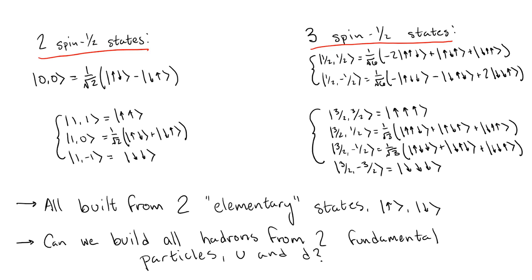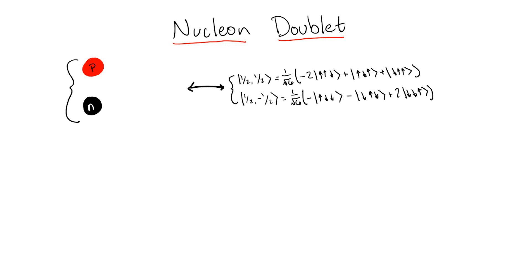Let's start with the nucleons. We know that this doublet has total isospin half, where the proton has isospin plus one half, and the neutron has isospin minus one half. In the case of normal spin combinations, we see that the spin plus one half state of the total spin half doublet is made up of two up spins and one down spin, while the spin minus one half state is made up of one up spin and two down spins.